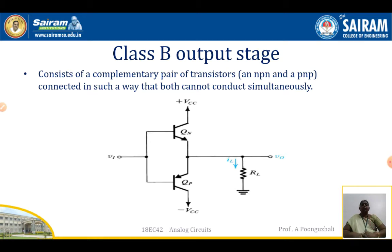Our requirement is to get the full sine waveform. In order to get the full sine waveform, we use the Class B amplifier as a push-pull amplifier, where the push-pull amplifier consists of a complementary pair of transistors — an NPN transistor and a PNP transistor — connected in such a way that they cannot conduct simultaneously.